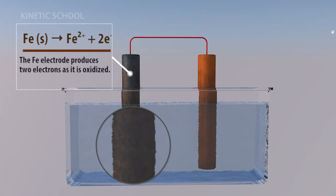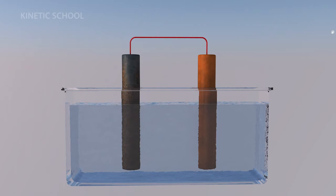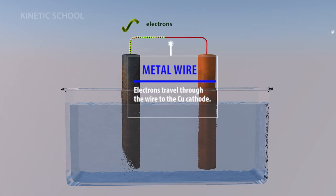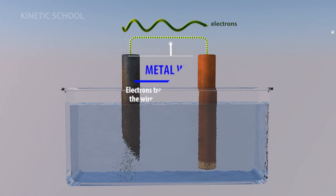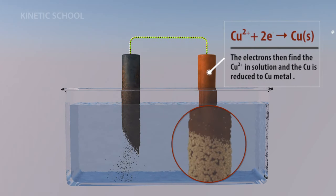The iron electrode produces two electrons as it is oxidized (Fe(s) → Fe²⁺ + 2e⁻). Electrons travel through the wire to the copper cathode. The electrons find the copper ion in solution and the copper is reduced to copper metal.